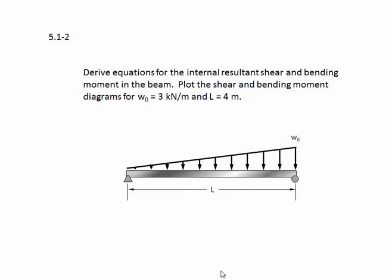Problem 5.1-2. The problem reads: derive equations for the internal resultant shear and bending moment in the beam. Plot the shear and bending moment diagrams for W naught equal to 3 kilonewtons per meter and L equal to 4 meters. Here's our beam. It is simply supported with a pin at one end, a roller at the other, and has a triangular distributed load with the maximum distributed load being W naught and a length of L.